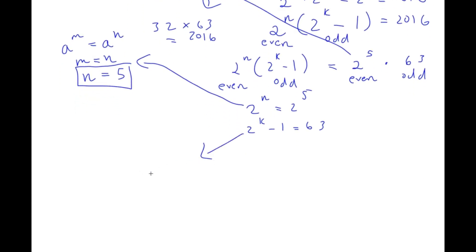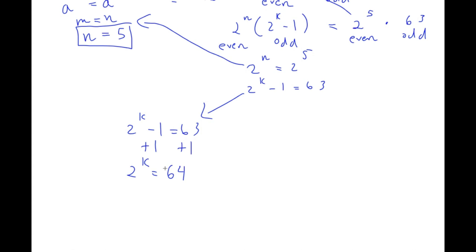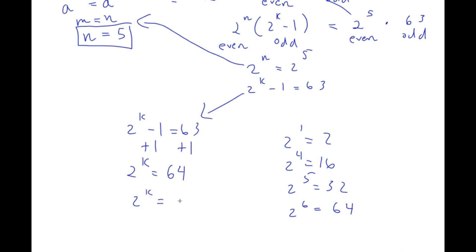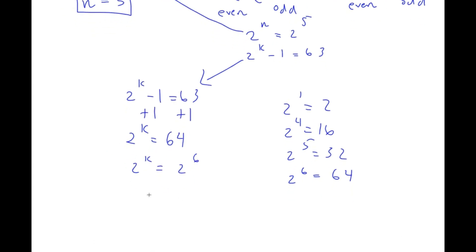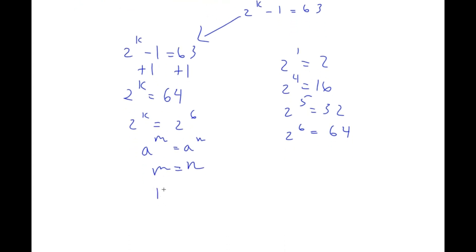For 2^k minus 1 equals 63, I add 1 to both sides to get 2^k equals 64. Now, 2^6 equals 32 times 2 which is 64. So 2^k equals 2^6, meaning k equals 6.